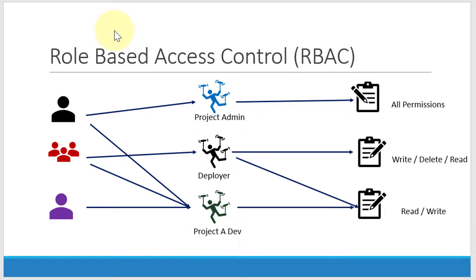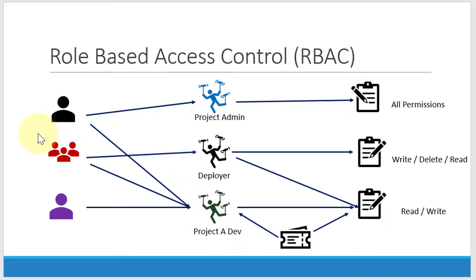So that all the users attached to that particular role will not have that particular permission. This third layer we are adding creates flexibility in terms of managing policies — attaching or removing them from users — as well as making changes to a group of users in a single change. Similarly, just like how I am attaching a role to the user, I can make the role get attached to a token, or directly attach the policy to a token.